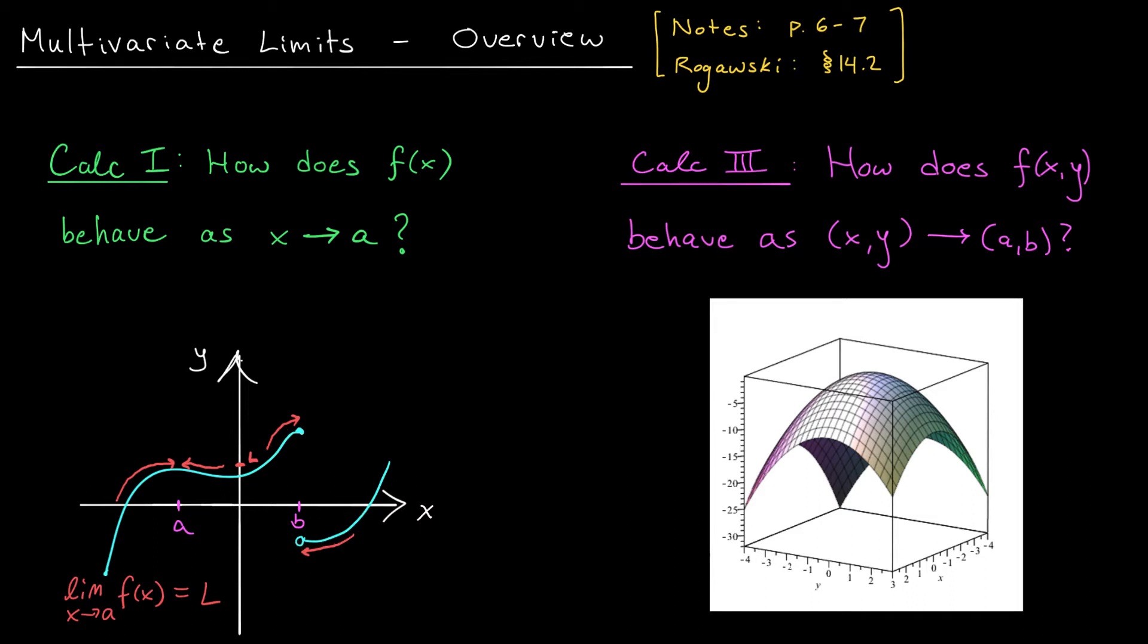So in this case, we simply say the limit doesn't exist. The limit as x goes to b of f(x) does not exist. Since the behavior is different along different paths, we fail to have a limit.